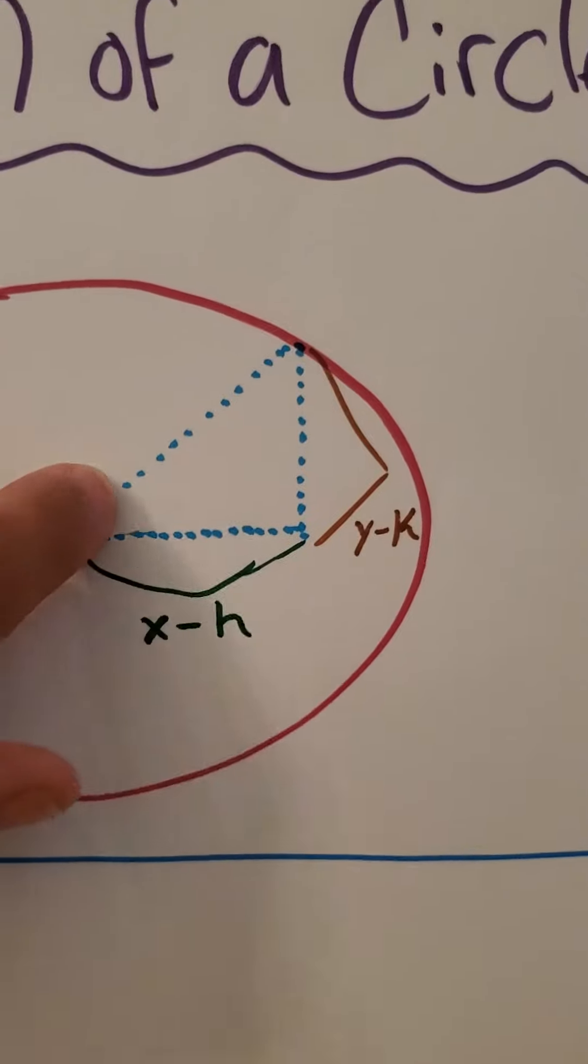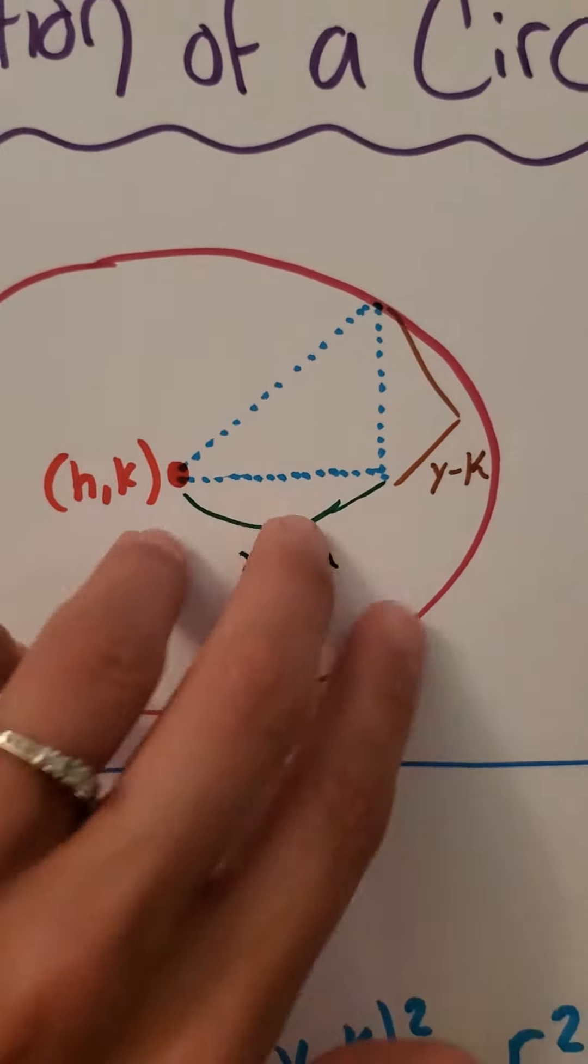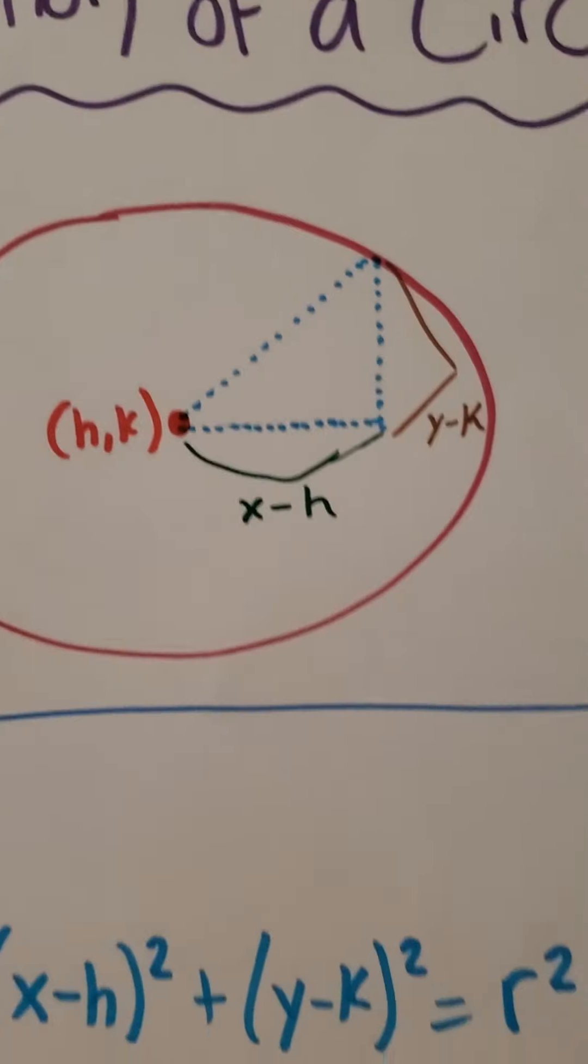And typically you'll see a right angle, a triangle in our circle. And this is how we find the points to write the equation for the circle.